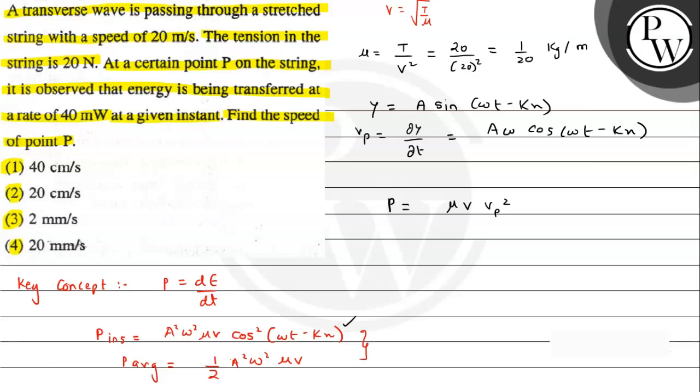That is 40 milliwatts. We can substitute: 40 times 10 to the minus 3 equals mu value, which we calculated as 1 by 20, times the wave speed of 20, times vp squared. From this we can say